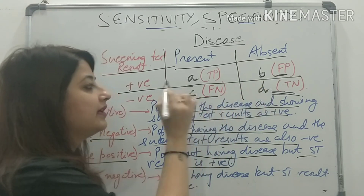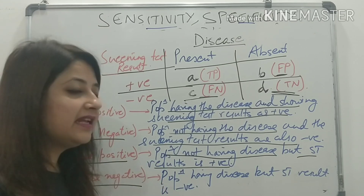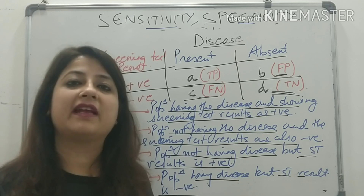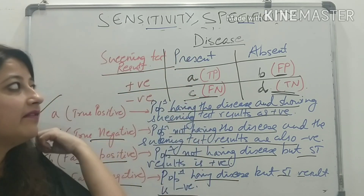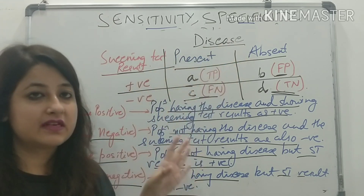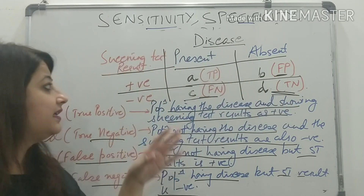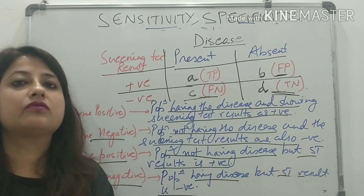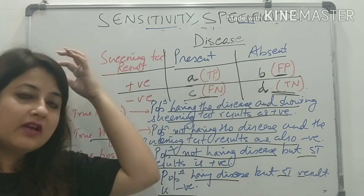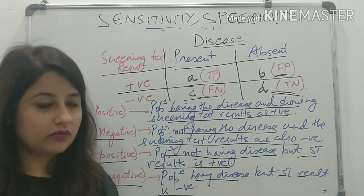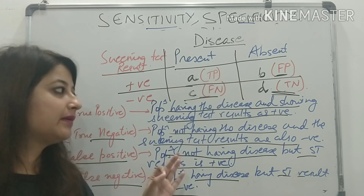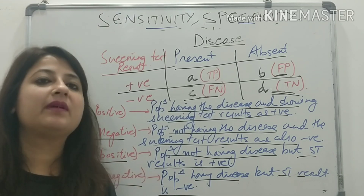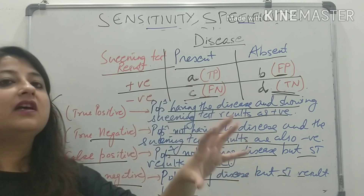Lastly, look at C — false negative — which means the population is having the disease but the screening test result is negative. The population has the disease but the screening test result is showing it as negative. So please remember: whenever a question comes on sensitivity and specificity, four scenarios could arise depending on disease present or absent, and whether my screening test result is positive or negative.